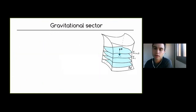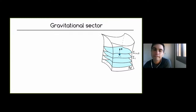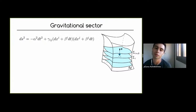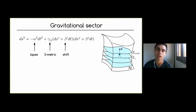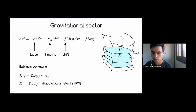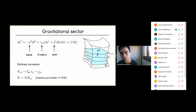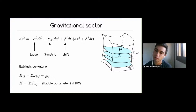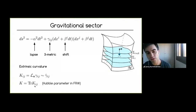We formulate GR as an initial value problem by slicing spacetime with spacelike hypersurfaces which evolve in time. The standard decomposition we use is the 3+1 decomposition — the ADM decomposition — in which we slice spacetime with a three-metric, lapse, and shift as dynamical gauge variables. We also have the extrinsic curvature, which is approximately the time derivative of the three-metric, encoding how the hypersurface is embedded in the four-dimensional spacetime. Its trace corresponds to the Hubble parameter in FRW.